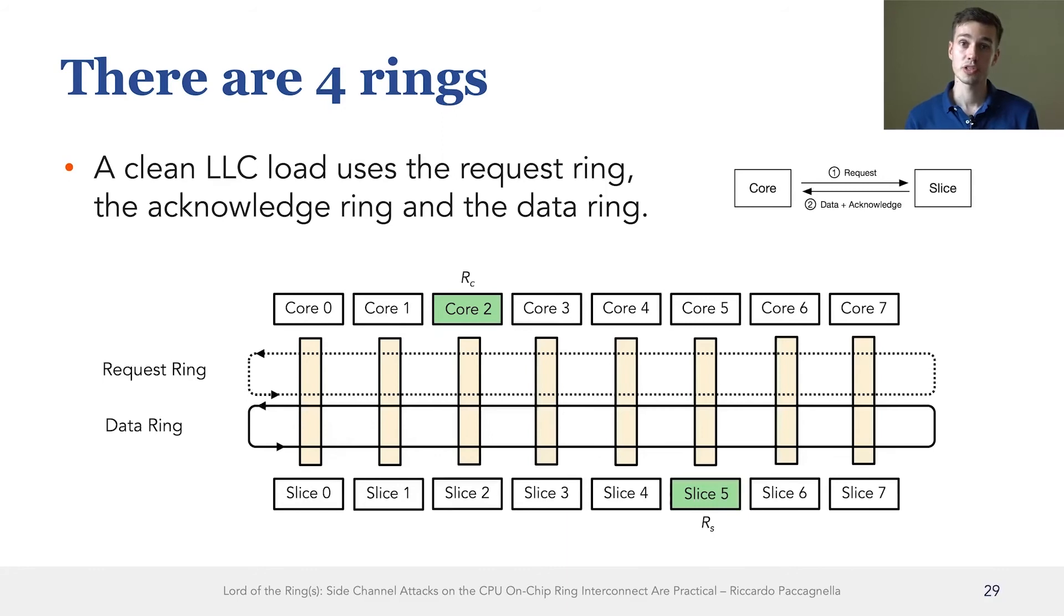For example, when the receiver is on core 2 and it wants to read some data from slice 5, it will have to issue a request that travels on the request ring all the way to slice 5. And the same way, when the slice has to send some data back to the core, it will have to send this data through the data ring.